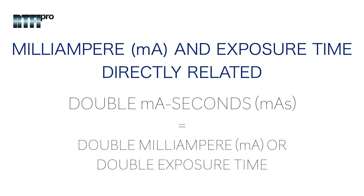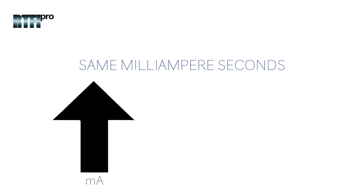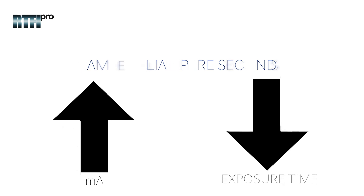Milliampere seconds can be doubled by doubling the milliampere or by doubling the exposure time. A change in either milliampere or exposure time proportionally changes the milliampere seconds. To maintain the same milliampere seconds, the radiographer must increase the milliampere and proportionally decrease the exposure time. For example, if the original exposure was set at 10 MA and an exposure time of 10 seconds, it would be a 100 milliampere second exposure.